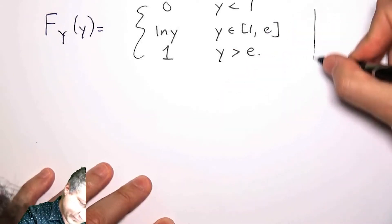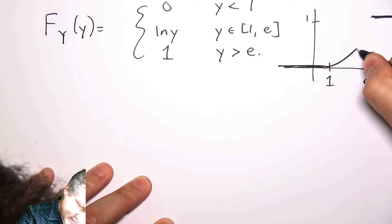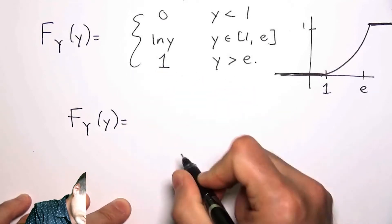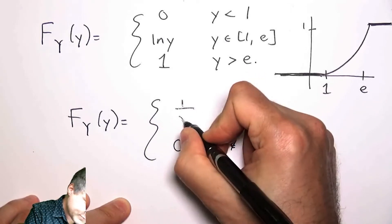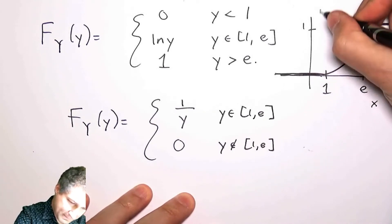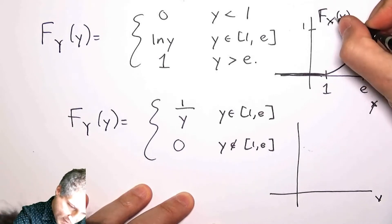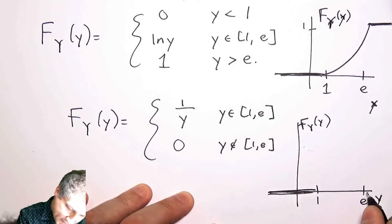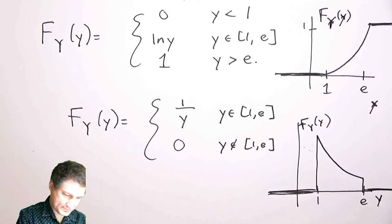If I were to plot that: here's 1, here's e — the CDF is 0 up to 1, then ln(y) gently slopes up, then 1 after e. To compute the PDF I take the derivative: it's flat outside the interval, and inside the interval the derivative of ln(y) is 1/y. At y=1 the PDF value is 1, and at y=e it's 1/e, which is smaller, so it slopes downward.